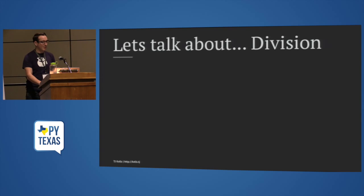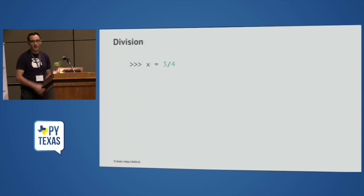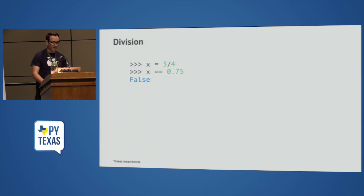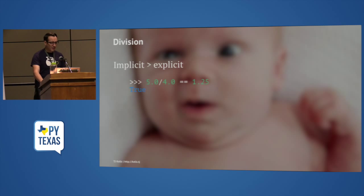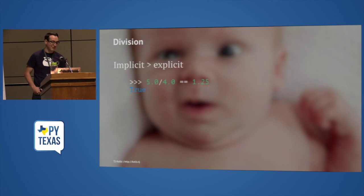Sometimes in my very important job, I get to work on really computationally complex math problems, like you see on the screen here. I want to know what three divided by four is — obviously it's 0.75, everyone knows that. It turns out Python assumes that if I'm doing math, I'm doing integer math.